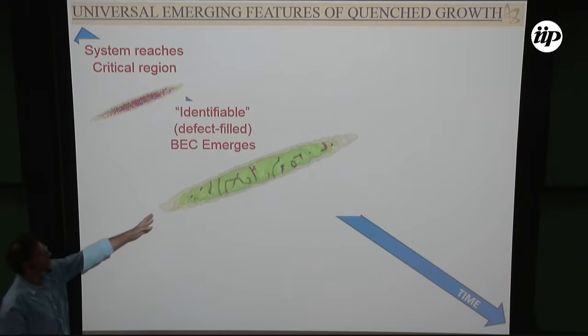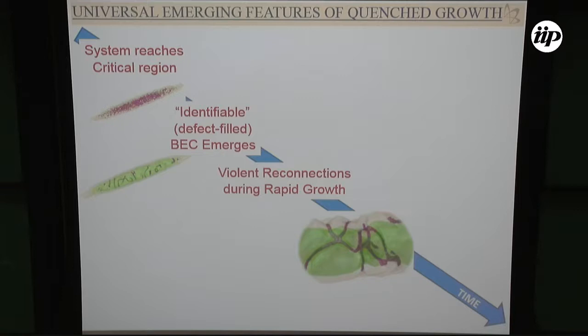The system is growing axially and radially, stretching these defects. There are reconnections, and defects can also be lost at the edges in what Gabriele and co-workers called vortex ejection. Here's an example of reconnections — and in answer to a question about rings: here's a ring appearing transiently during the evolution. It's not a well-formed ring, but it happens during the process. Eventually you get a nice formed condensate.